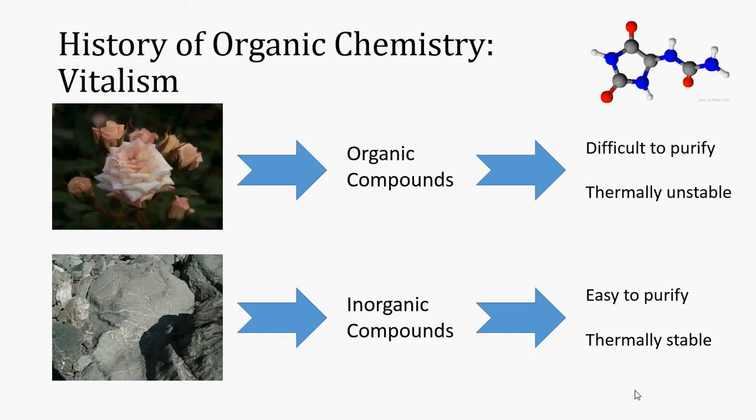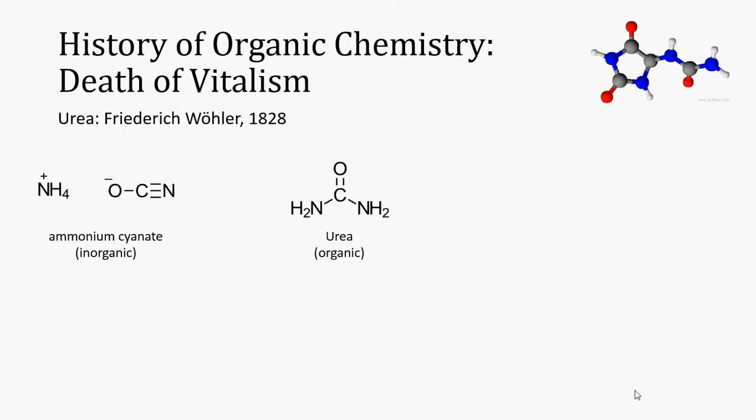However, the experiments that I'm about to tell you about started to cast some doubts on vitalism, as it became obvious that the type of matter in inorganic compounds and organic compounds were made up of the same elements of the periodic table, and one can interconvert between the two. The classic experiment that is often described as being the death of vitalism is one that was conducted by Friedrich Wohler in 1828. Friedrich Wohler was a German chemist who had discovered that if he heated an aqueous solution of ammonium cyanate, which he had isolated from lead cyanate, a mineral, he could produce urea.